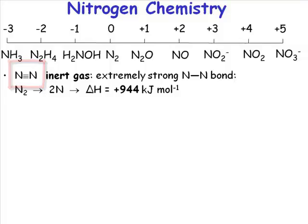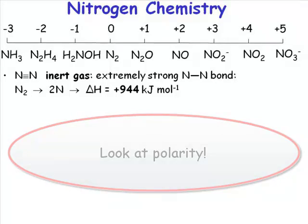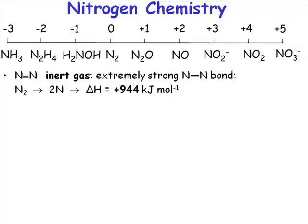It's a relatively inert gas. Why is it relatively inert? It's non-polar. If you're going to predict the reactivity of something, you have to look at its polarity. N2 is non-polar because the two nitrogen atoms have the same electronegativity. N2 is a non-polar molecule, and it's triply bonded.